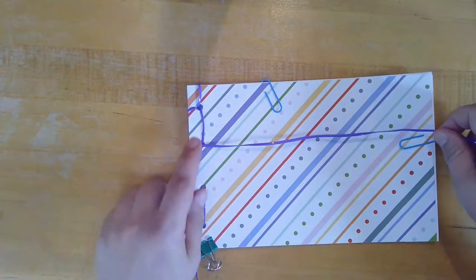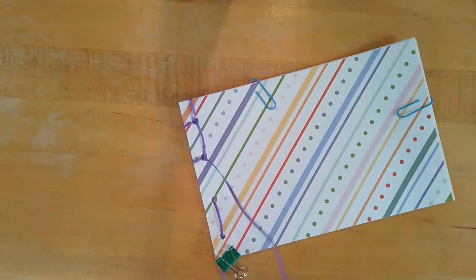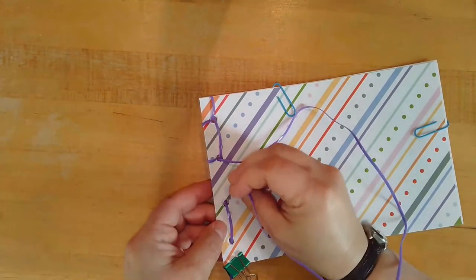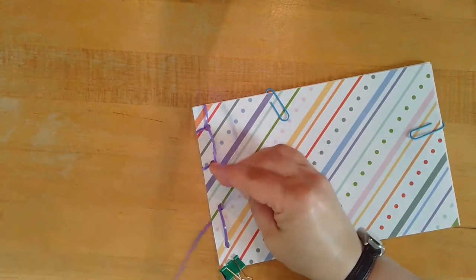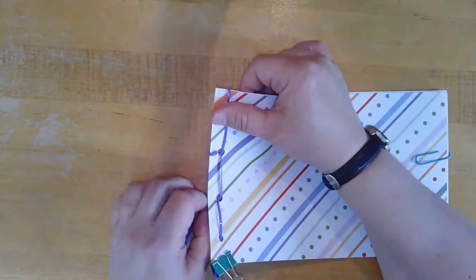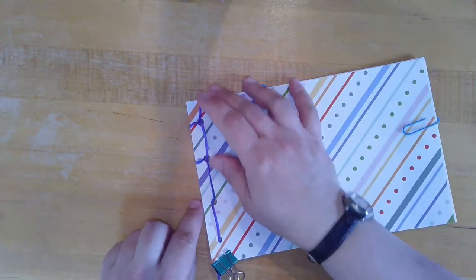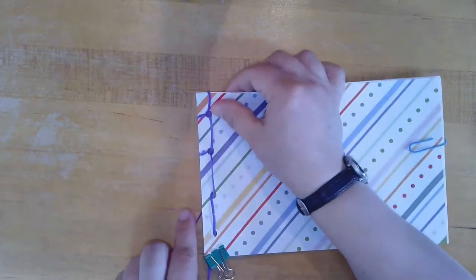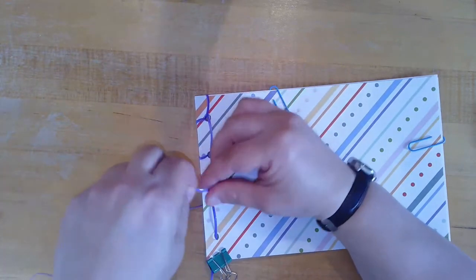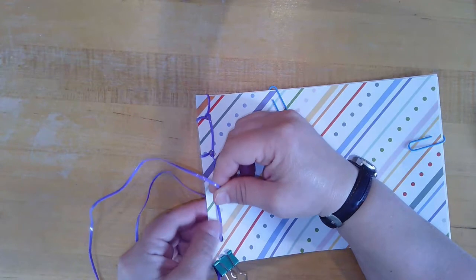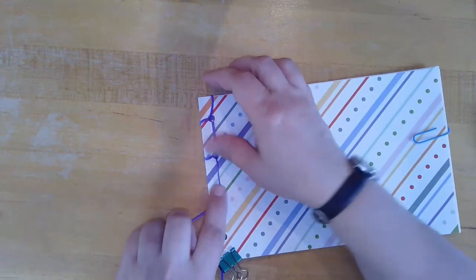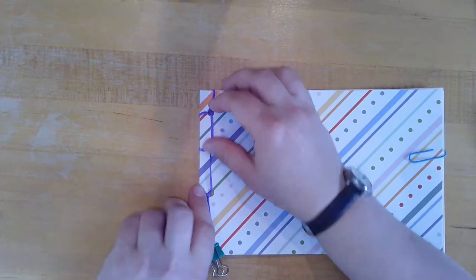You're going to bring your string down to the second from bottom hole, coming in from the front. Pushing through to the back. Checking to make sure it's not twisted. Again, bringing it around from the back to the front. Pushing through the front hole. Out the back.